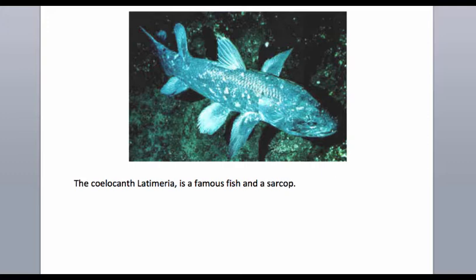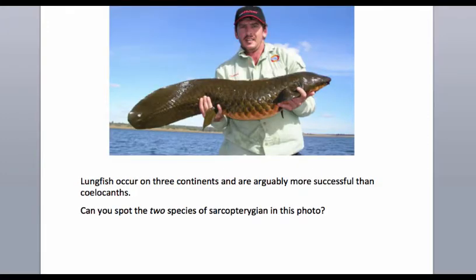This is a live coelacanth — the Latimeria coelacanth that lives at the bottom of the Indian Ocean — a rare image taken in its actual habitat rather than a dredged carcass. The other kind of Sarcopterygian fish-like organism is the lungfish, and this is an Australian lungfish captured by an angler. There are actually two forms of Sarcopterygian in that photo.